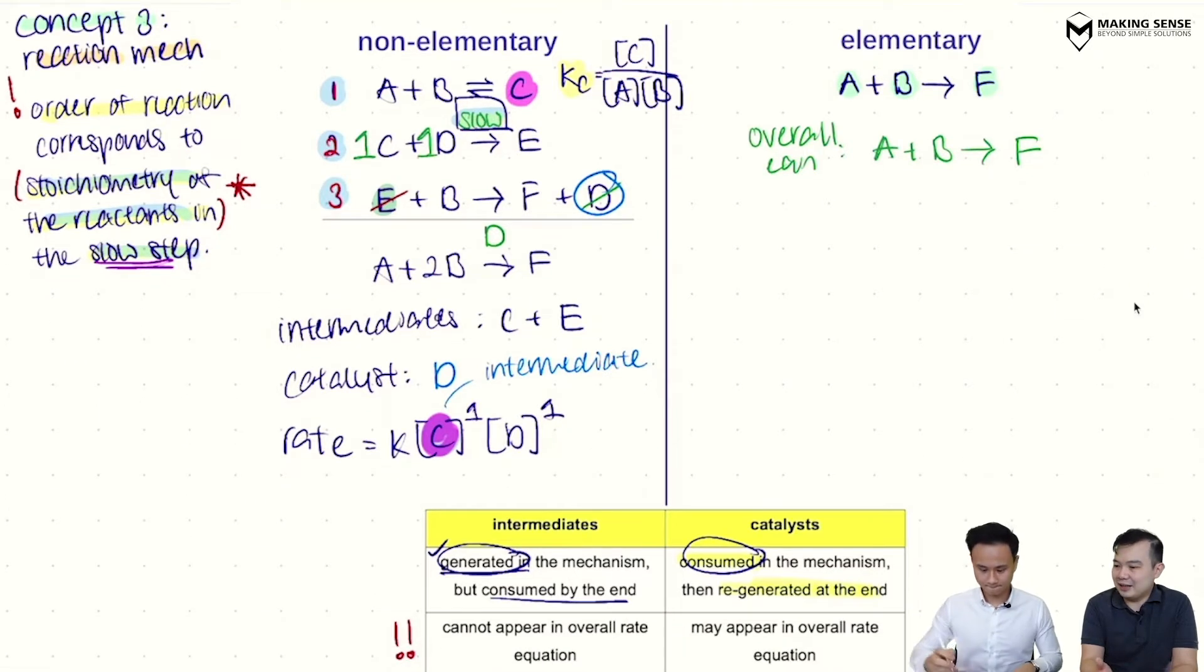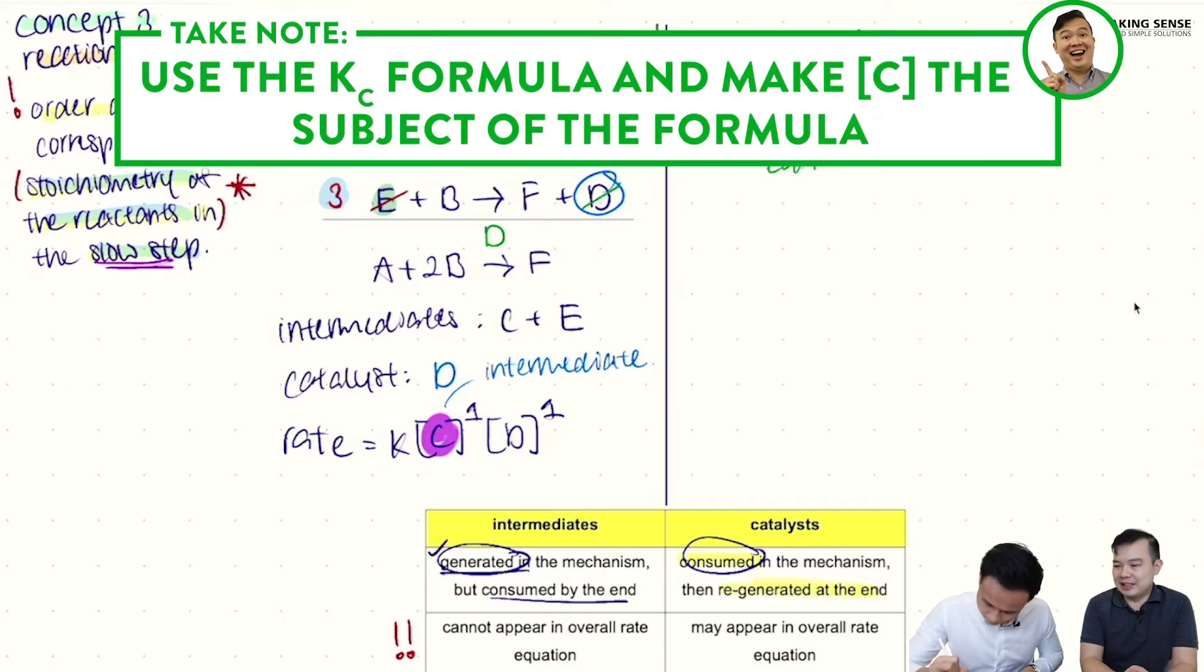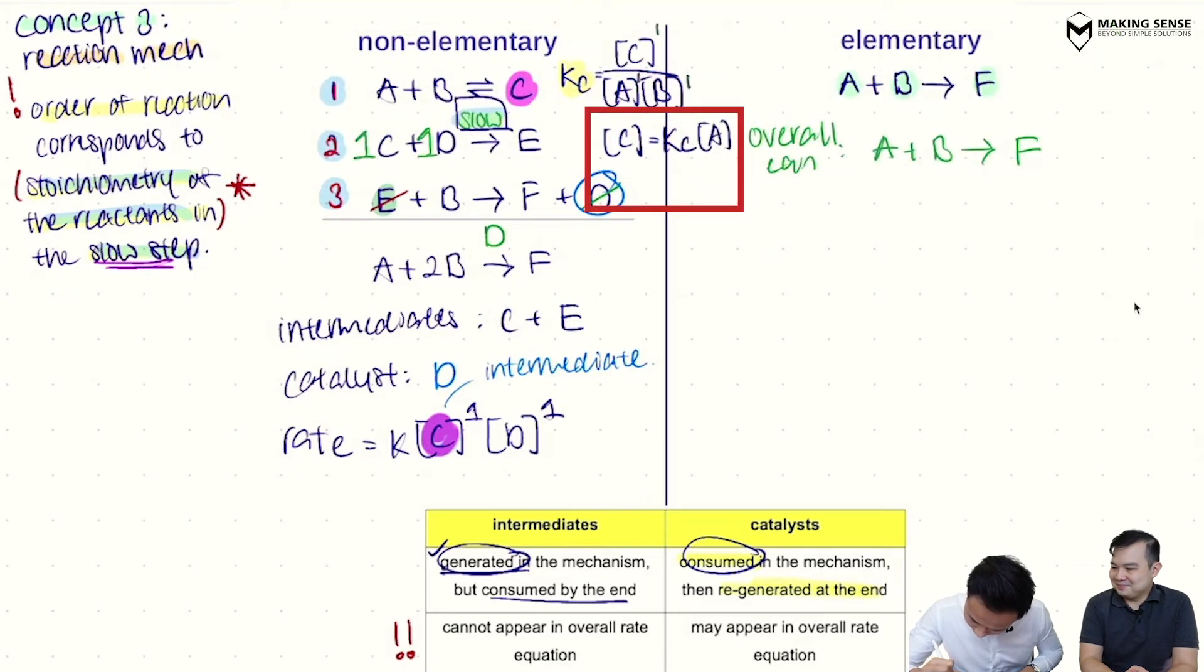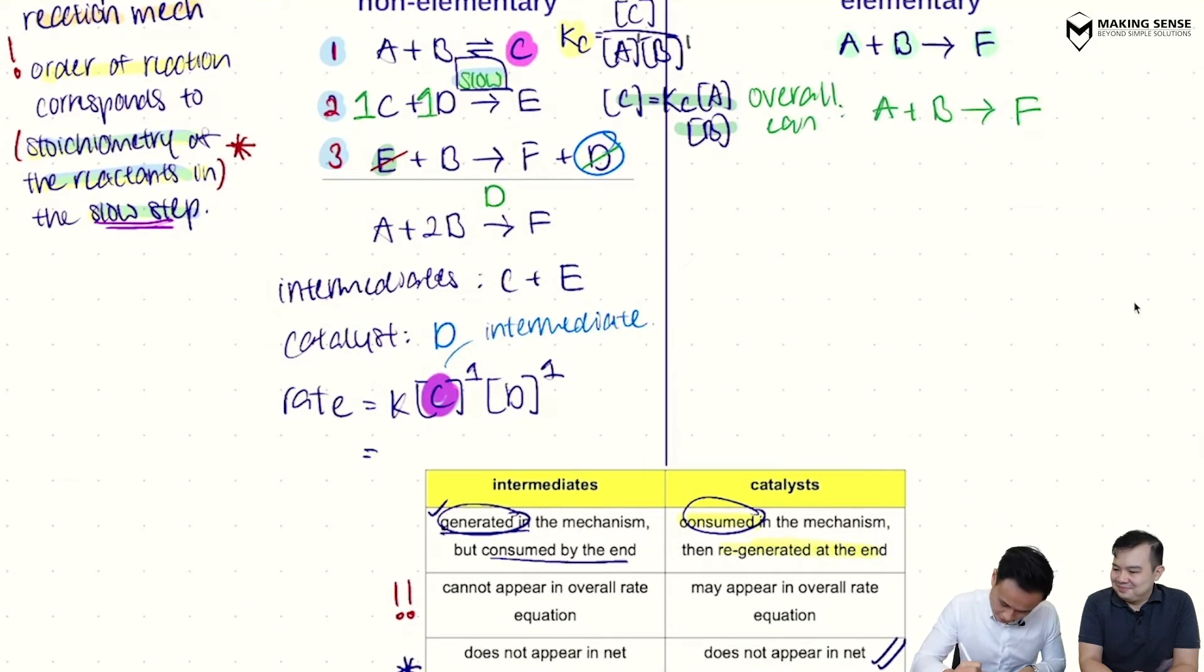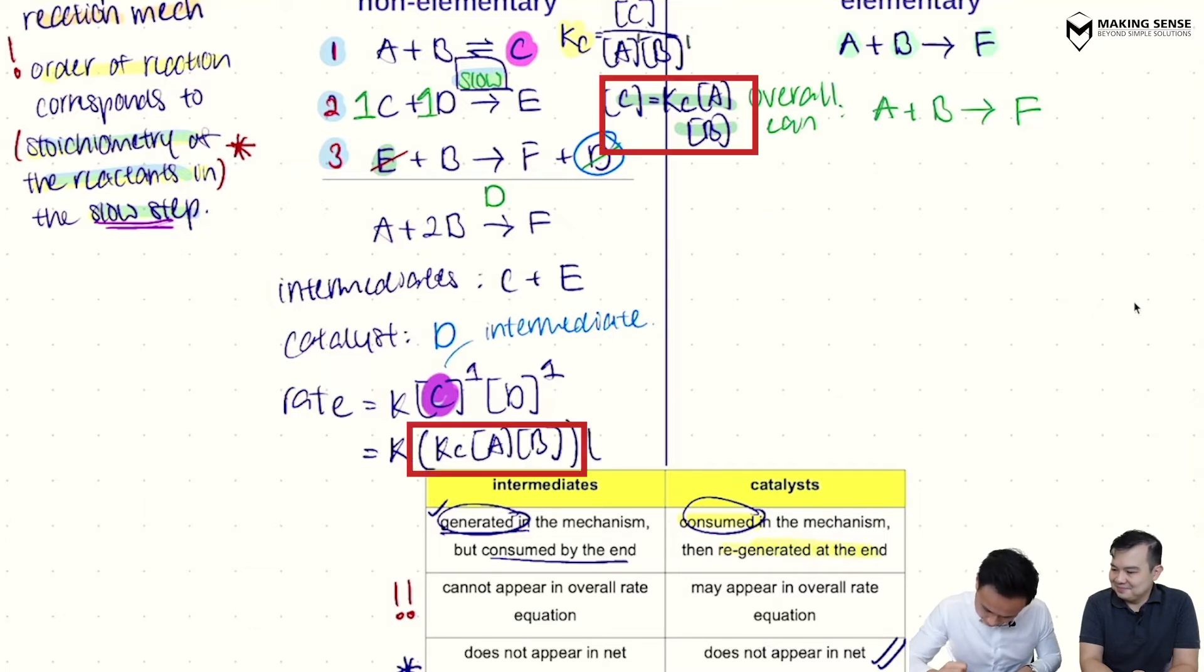So actually we haven't really learned this yet, but the whole idea is in equilibrium, you can always write this thing called an equilibrium constant. Equilibrium constant is always given by products divided by reactants. The concentration of products divided by concentration of reactants. So Mr. Ting, can you help me to write that out? So it's going to be C over concentration of A times concentration of B. That's right. And normally you have to raise the order, the power using the stoichiometry. Now, my objective is to get rid of C. So probably I'll use the KC at the top, so that I can make C the subject of the formula. So can you help me to do that?